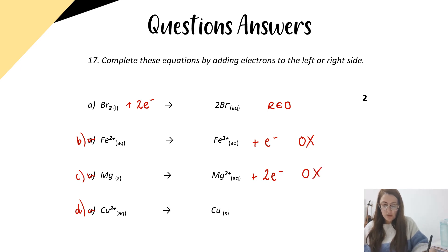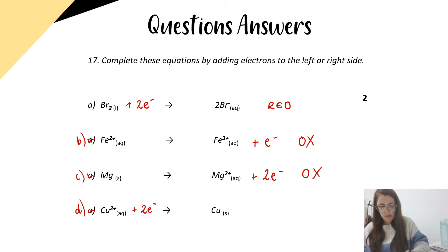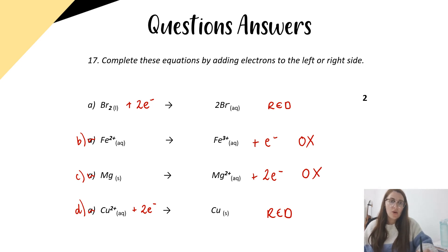Our last one: copper two plus going to copper. That is reduction because the two plus ion gains two electrons to become copper metal. So again, one mark for each of them if you got them correct. If you have any questions, shoot me an email or comment on the classroom and I'll get back to you as soon as I can. Have a lovely night guys.